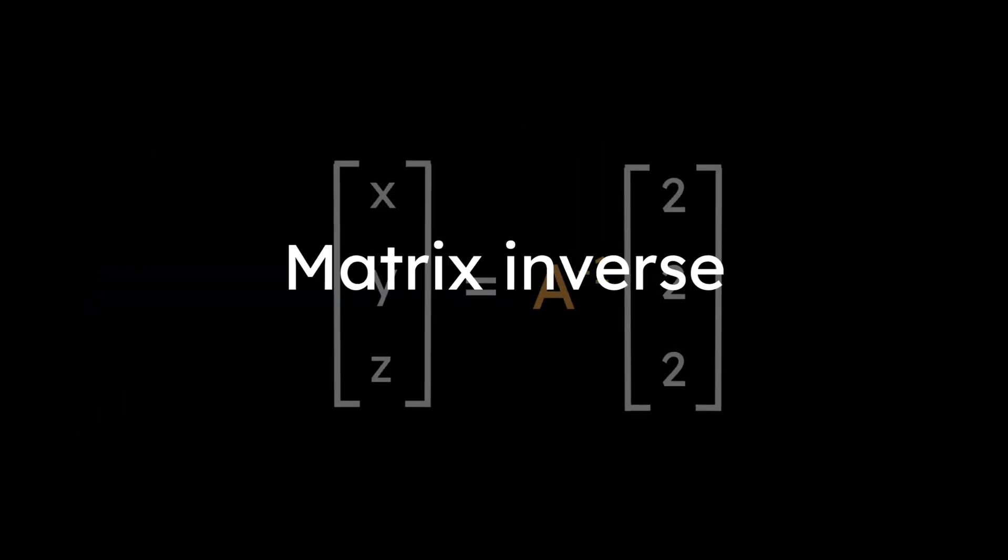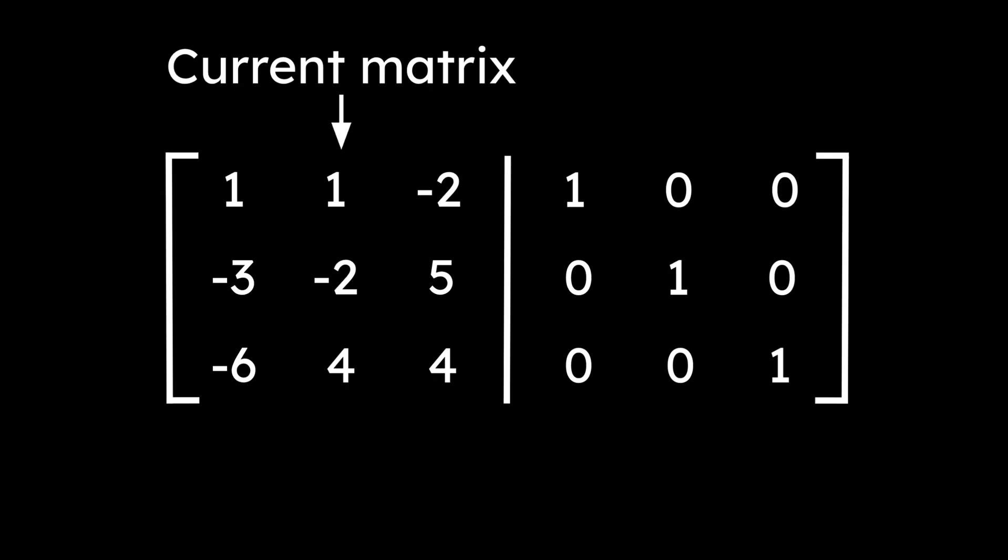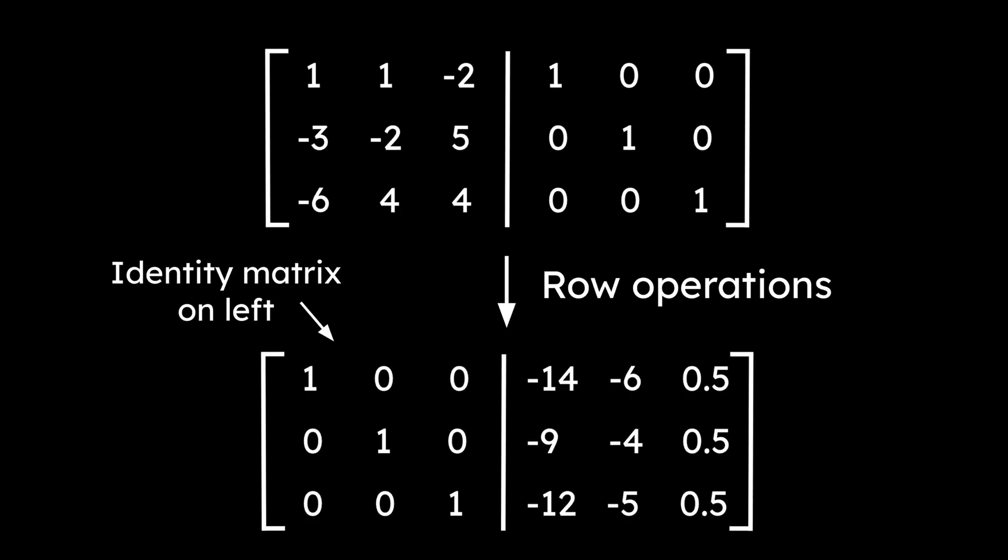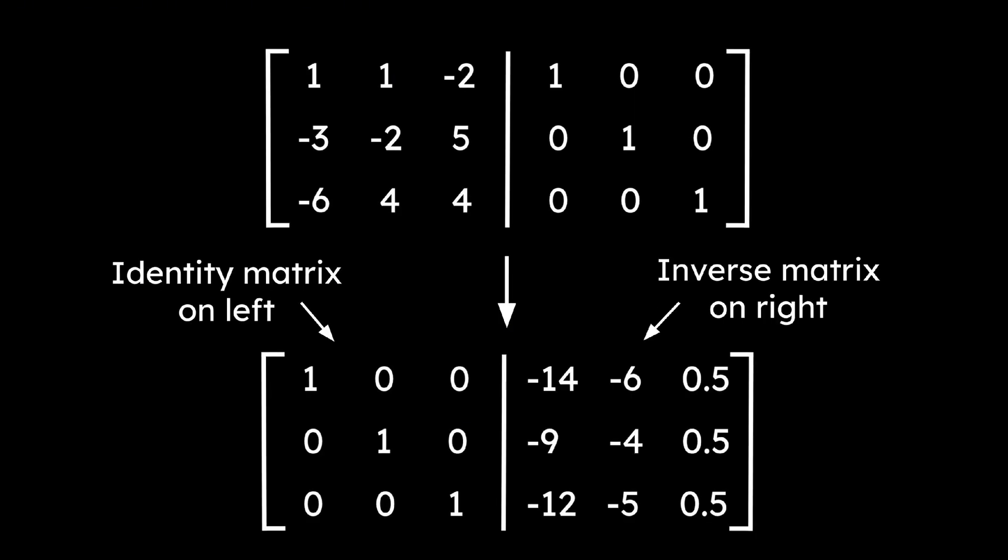To find this matrix inverse, we set up an augmented matrix with our current matrix on the left side and the identity on the right. Then, we perform row operations to get the identity on the left. On the right, we get the inverse matrix.